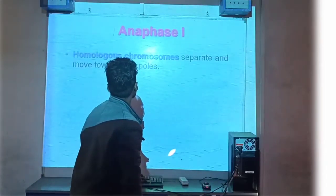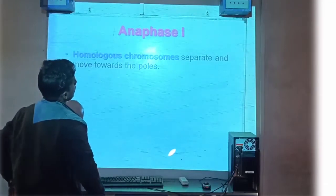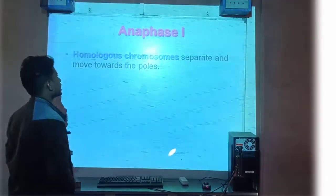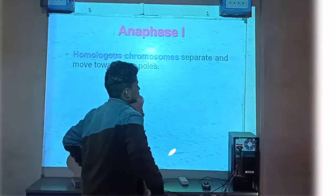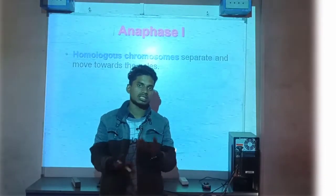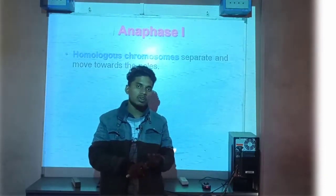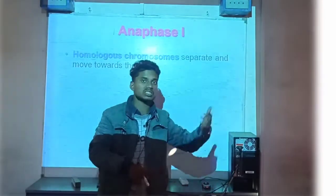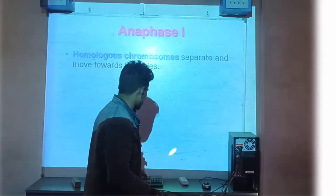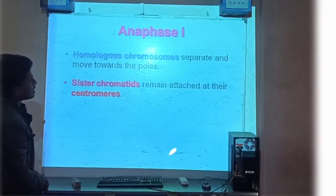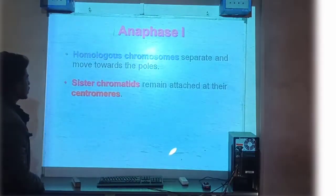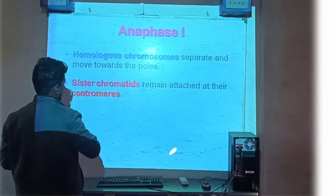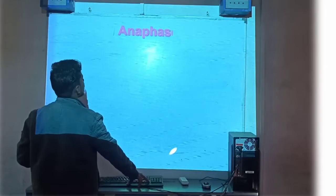Anaphase की बात करते हैं — Anaphase third phase है आपका meiosis का। Homologous chromosomes separate होते हैं और move हो जाते हैं towards the pole। तो जो homologous chromosome हैं — जो same size और function में काम करने वाले chromosome हैं — वे separate होते हैं और move हो जाते हैं towards the pole। Sister chromatids remain attached at their centromere।